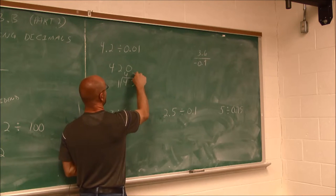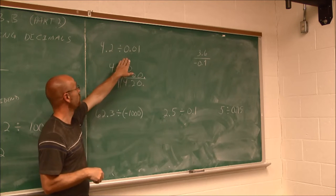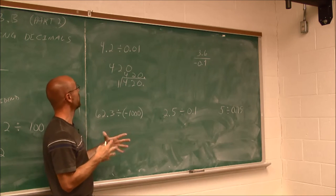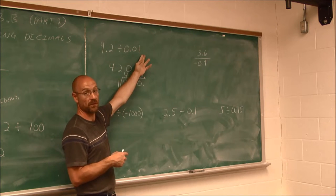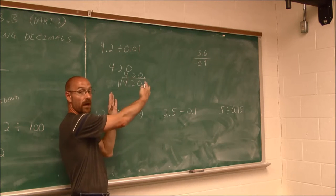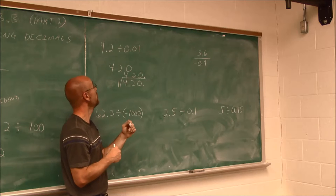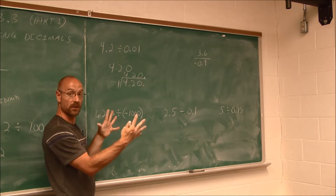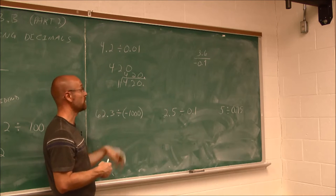So when we see factors of 10, we just need to remember: if dividing by a decimal factor of 10, move the decimal to the right by the number of factors. If dividing by a whole-number factor of 10, move the decimal to the left.